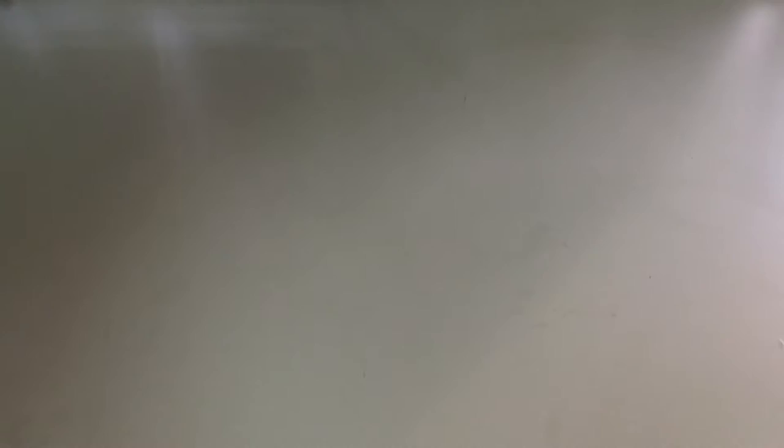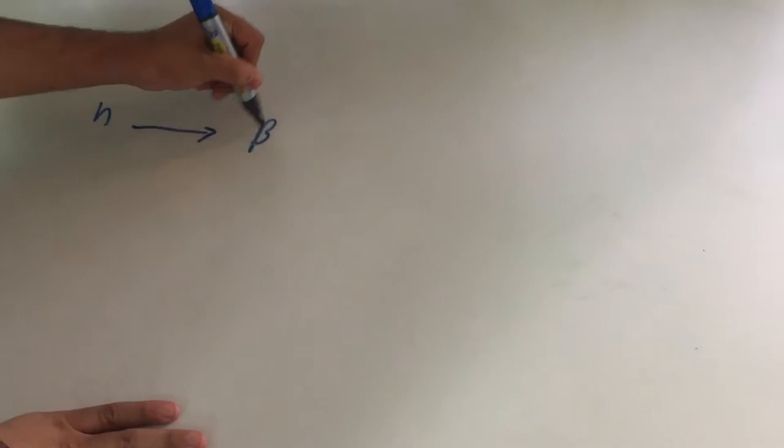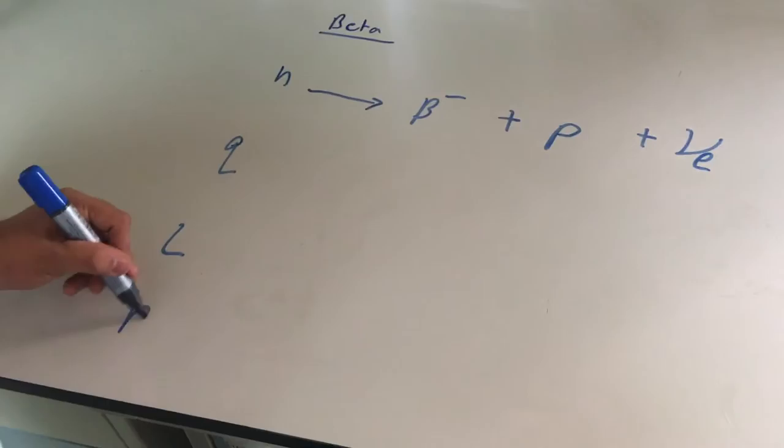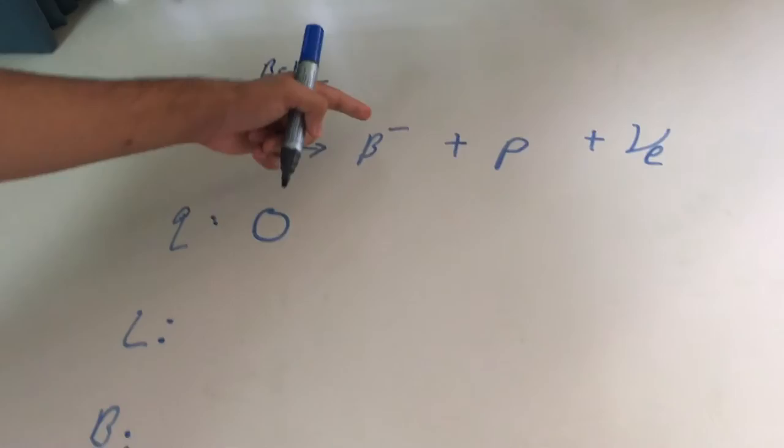So now we will give an example of an equation where these numbers are conserved. If we look at beta decay, for example, the equation is: a neutron decays into a beta minus particle, a proton, as well as an electron neutrino. Here, now let's look at the three different types of numbers to see if they are conserved or not. So if we look at the charge, the charge on a neutron is zero.